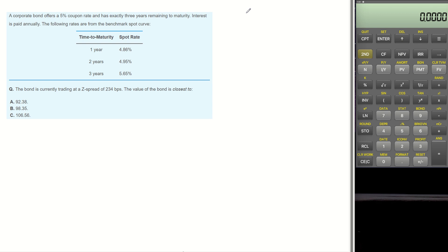A corporate bond offers a 5% coupon rate and has exactly 3 years remaining to maturity. Interest is paid annually. The following rates are from the benchmark spot curve. The bond is currently trading at a G-spread of 234 bps.